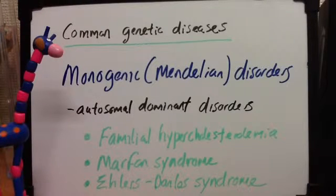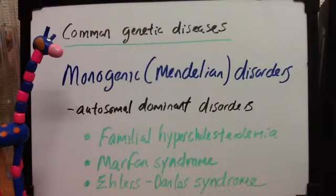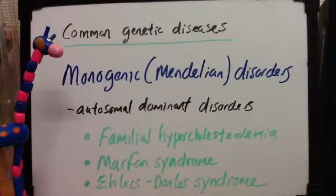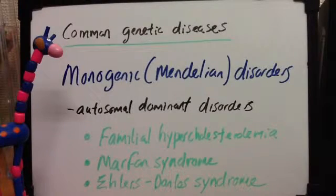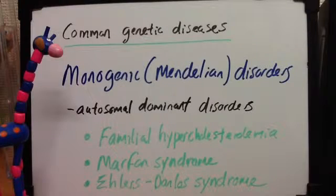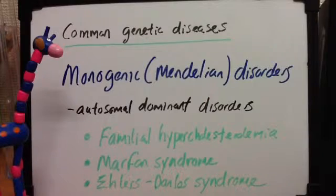Those are the three principal clinical manifestations of Marfan syndrome, but it is also very similar to Ehlers-Danlos syndrome, which is a genetic defect of collagen fibrils. There are several types, both autosomal dominant and recessive. Here also we have hyperextensibility of the skin, hypermobility of joints such as with a contortionist, and joint dislocations.